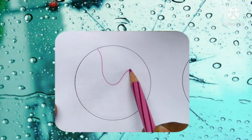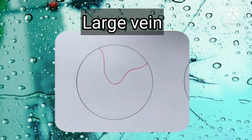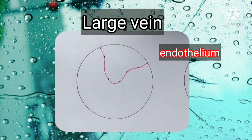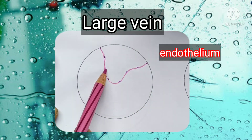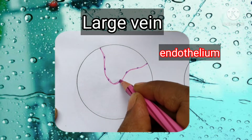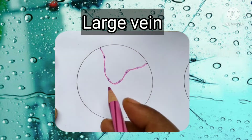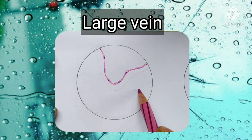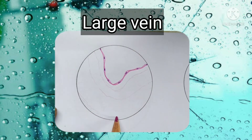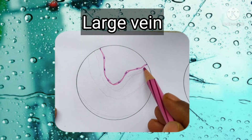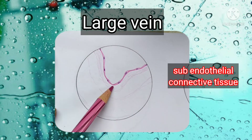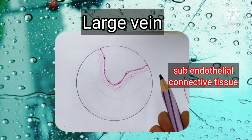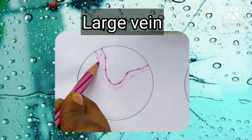Coming to the veins: veins have a collapsed lumen. For large veins, draw a collapsed lumen that is large enough. It will be lined by the same endothelium — squamous epithelium with flat nucleus and tapering ends. The other part of the intima is subendothelial connective tissue. Before drawing, make an outline of how much space you need for the intima, media, and adventitia using a light pencil. After the endothelium you have subendothelial connective tissue; there is no internal elastic lamina in the veins.